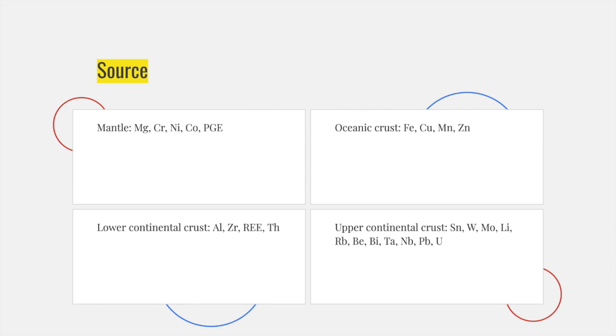Whereas tin, tungsten, molybdenum, lithium, rubidium, beryl, bismuth, tantalum, niobium, lead and uranium are sourced from upper continental crust.